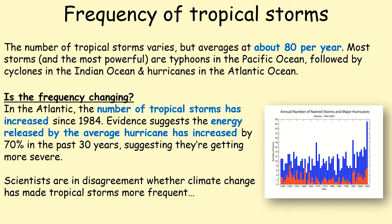Frequency of tropical storms: we get about 80 per year around the world. In the Pacific Ocean the typhoons are the most powerful. There is evidence to show that the number of tropical storms has increased and that these tropical storms are getting more severe. However, scientists are in disagreement whether it's because of climate change or not. Some say that if the air gets warmer there will be more oceans over 27 degrees centigrade, which will cause more tropical storms.